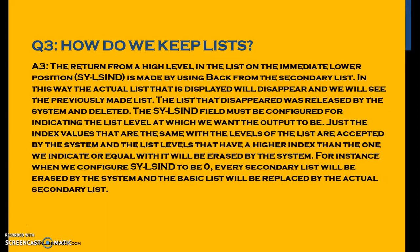The SY-LSIND field must be configured for indicating the list level at which we want the output. Only index values that are the same as the levels of the list are accepted by the system. List levels with a higher index than indicated, or equal to it, will be erased. For instance, when we configure SY-LSIND to zero, every secondary list will be erased and the basic list will be replaced by the actual secondary list.